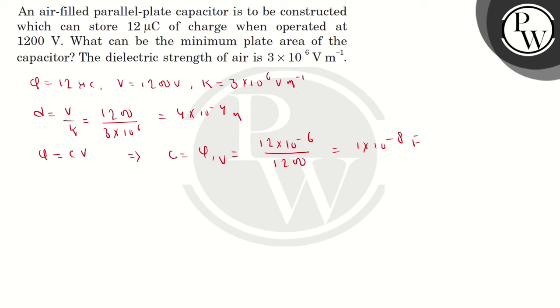For the parallel plate capacitor, the capacitance C is equal to epsilon_0 A divided by D. Placing the values, we can get A is C times D divided by epsilon_0.